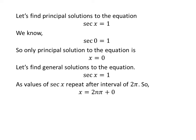Let us find the general solutions. As we know, the values of sec x repeat after the interval of 2π. So the general solution is 2nπ plus 0, where n is an integer.